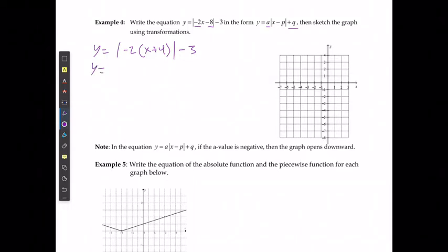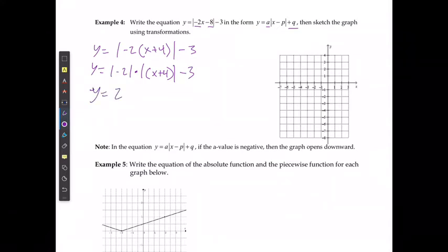So that's going to be the same as the absolute value of negative 2 multiplied by the absolute value of x plus 4 minus 3. The absolute value of negative 2 is going to be 2, and the absolute value of x plus 4 minus 3.